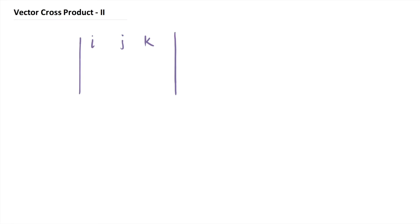Next, write down the elements of vector u in the second row — u1, u2, and u3 — and then write down the elements of vector v in the third row: v1, v2, and v3. The vectors u and v are arranged so that the x-projections line up below i, the y-projections line up below j, and the z-projections line up below k.